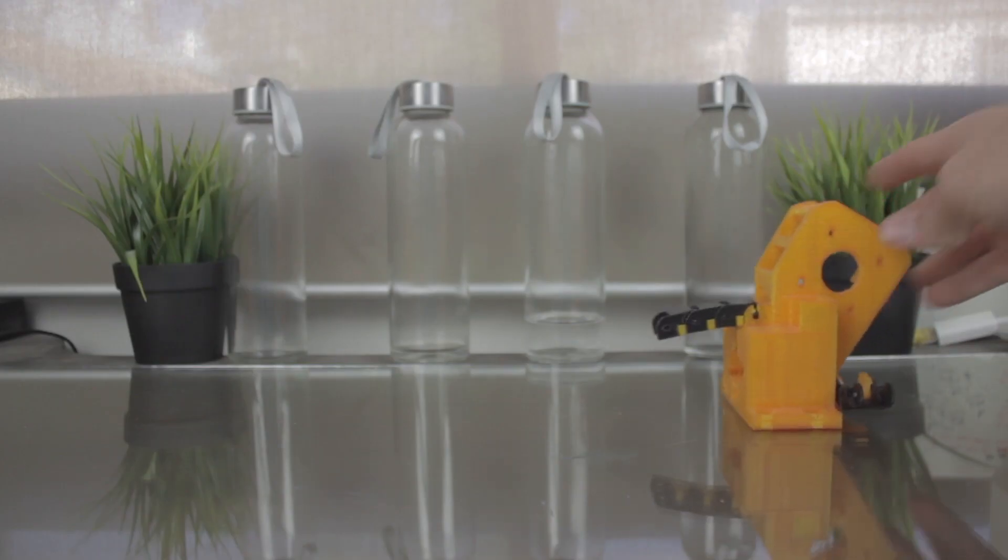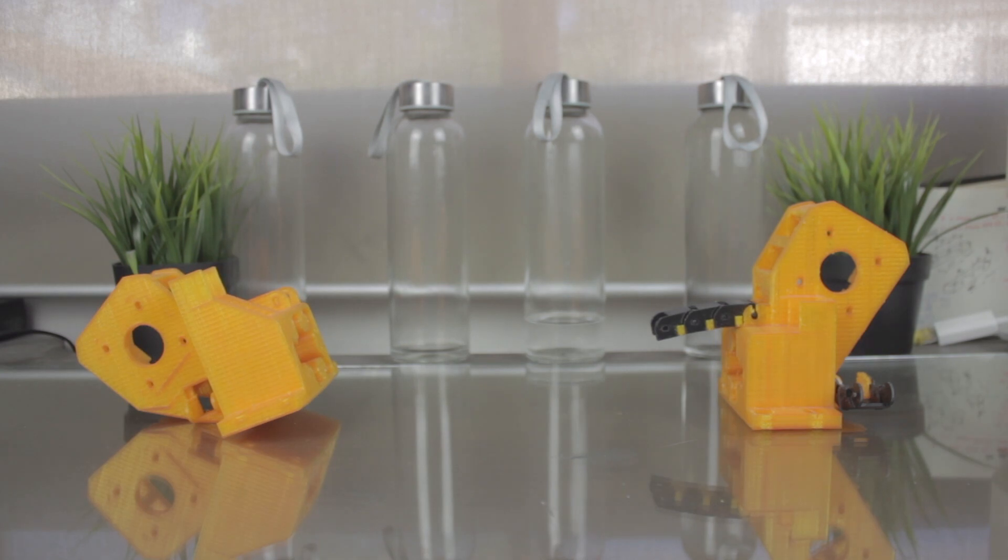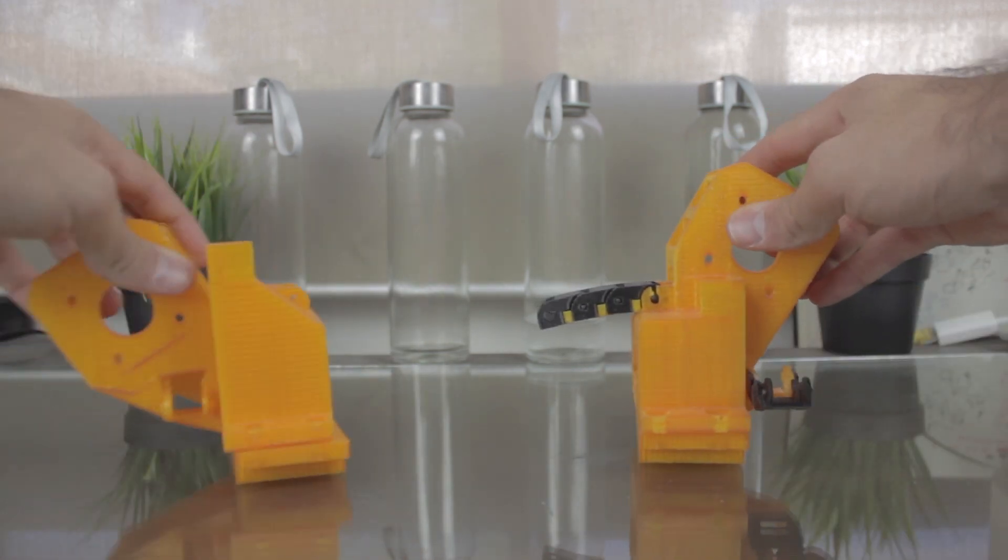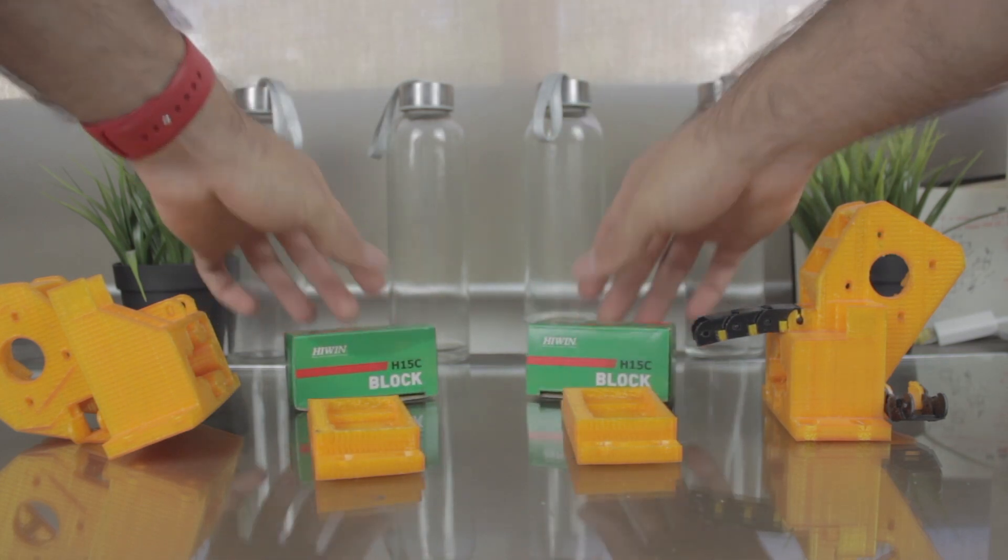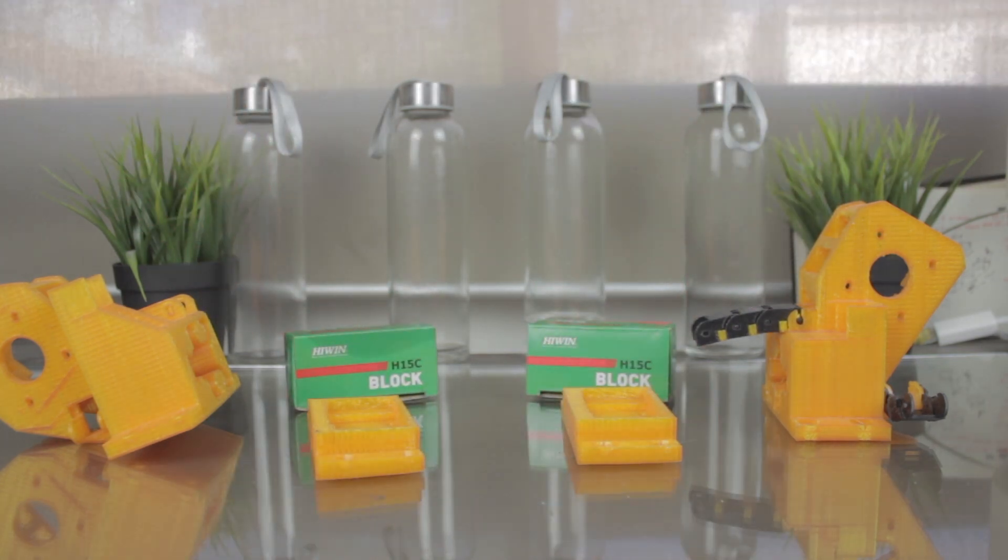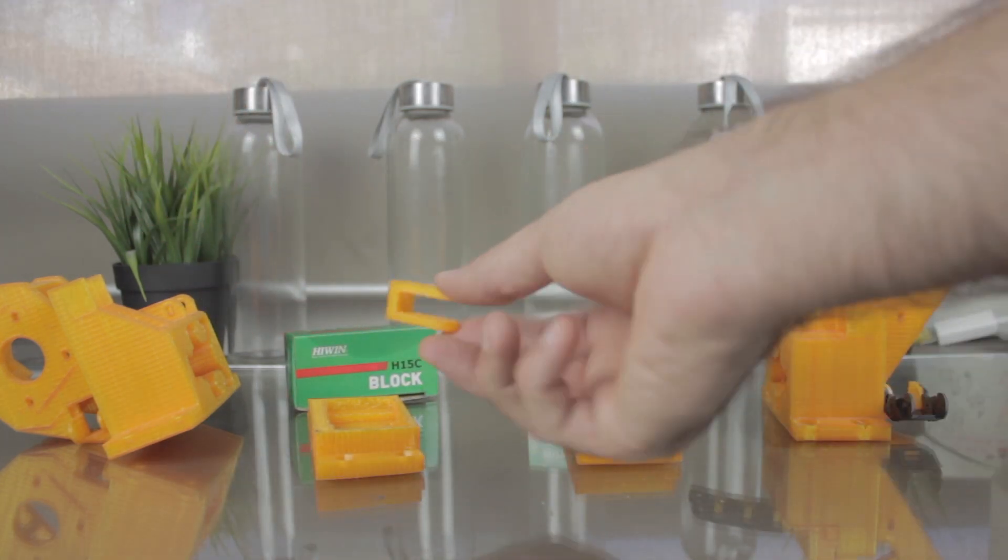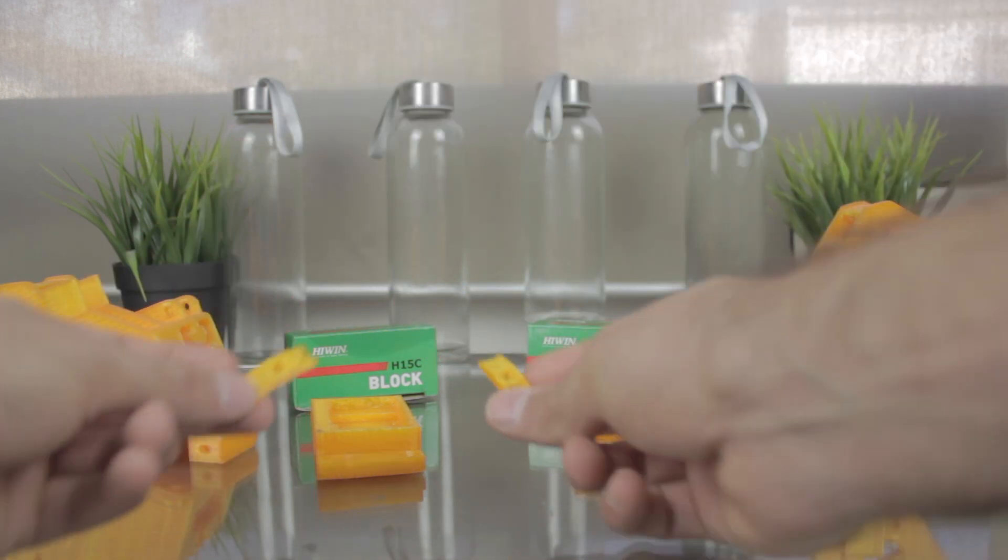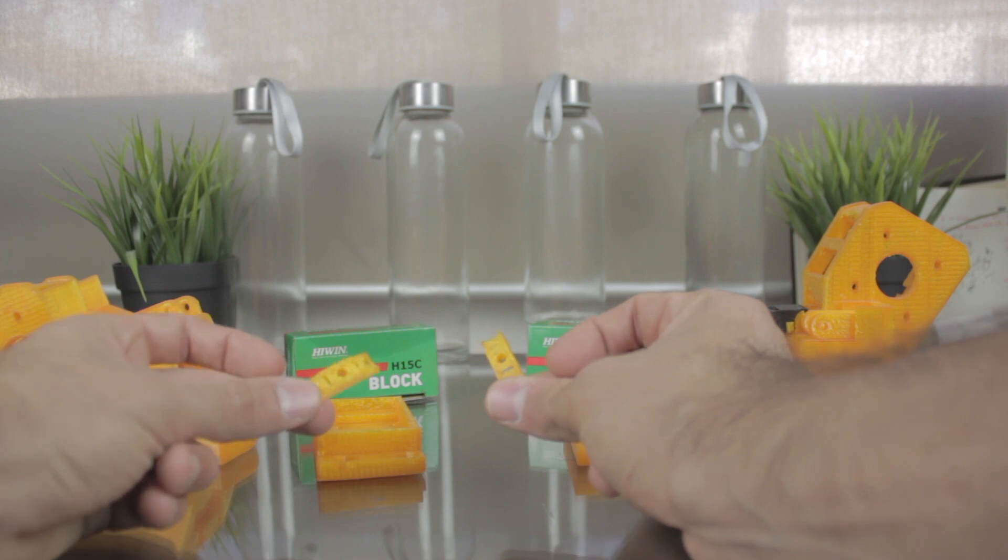Alright guys, so once you are subscribed to the channel, and make sure you are, I'm gonna continue with the assembly of the x-axis from where I left it. Here we have both ends of the x-axis that will be mounted on top of these two carriages like so, and will move along the y-axis thanks to two more Hiwin carriages. We'll also install the tensioning mechanism that will be mounted here and here, as well as these belt clamps and more components that I'm going to show you later.